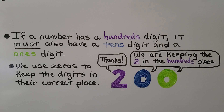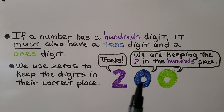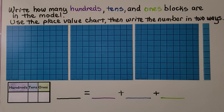If a number has a hundreds digit, it must also have a tens digit and a ones digit. We use zeros to keep the digits in their correct place. The digit 2 is in the hundreds place because the zero in the tens place and the zero in the ones place are keeping it there.